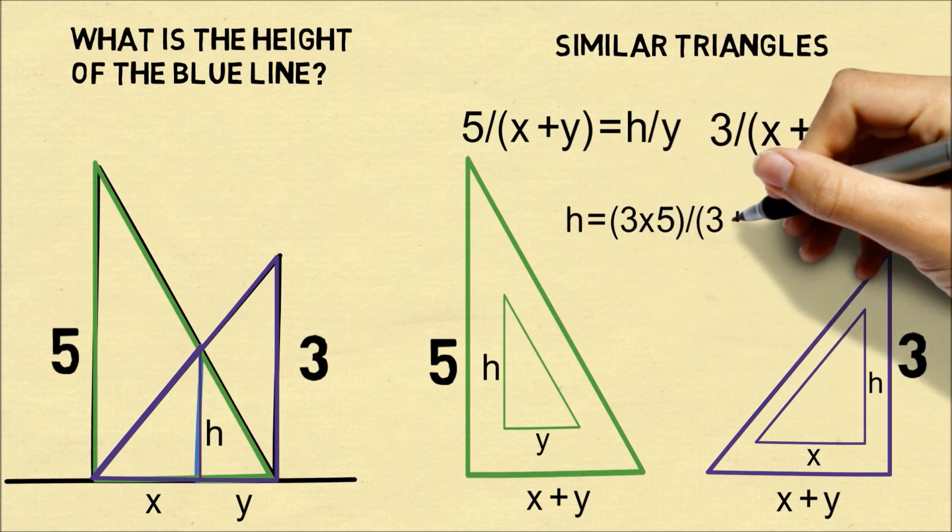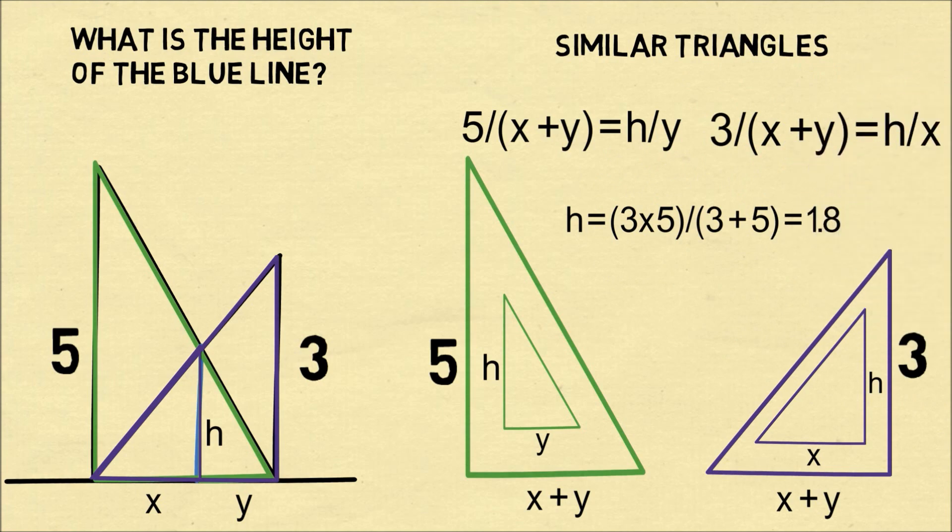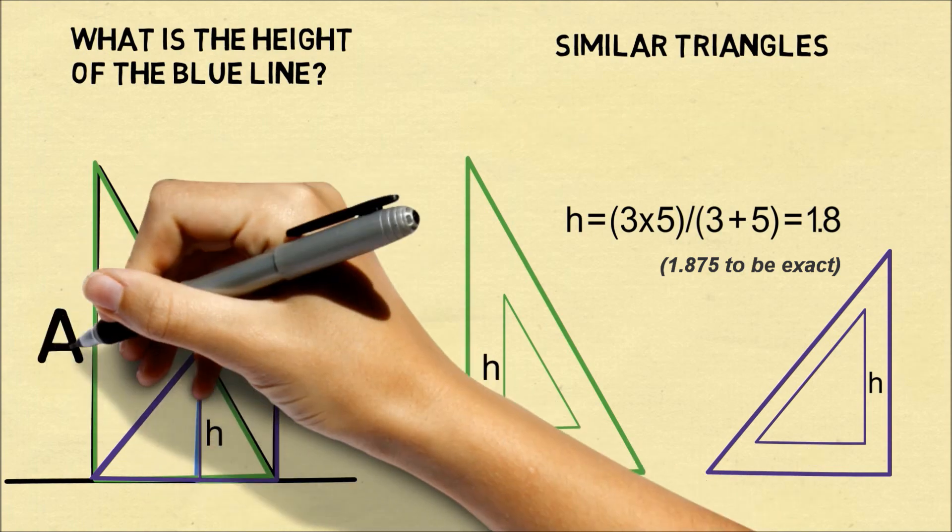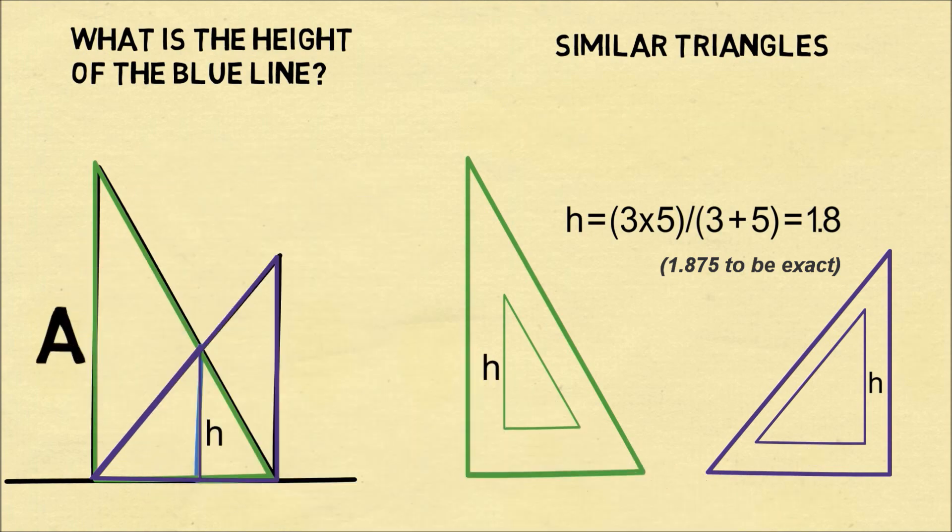We can go through a bunch of algebra here and get that h is equal to 3 times 5 over 3 plus 5, which is 1.8. All the x's and y's cancel out. So that's pretty neat. We can figure out the height of the blue line just from the distances of the two walls.